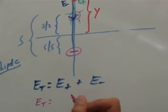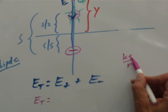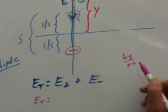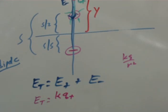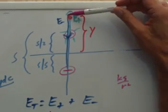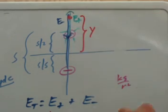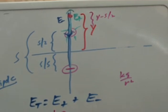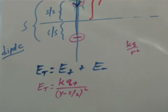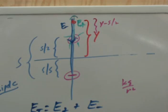The electric field due to a point charge is KQ over R squared. For the positive charge, I have K times Q positive, divided by the distance squared. The distance from the red point to the positive charge: the red point is at Y above the origin, and the positive charge is at S over 2 from the origin, so the distance is Y minus S over 2. The electric field E plus is KQ positive over (Y minus S/2) squared, and it points upward — the positive direction.